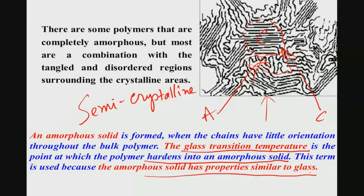When the crystalline-to-amorphous transition takes place, this is called the glass transition temperature (Tg) — the point at which the polymer hardens into an amorphous solid. The term 'glass' is used because amorphous solids have properties similar to glass. A popular example is mica-based dental glass ceramics used for dental restorations, where the crystalline-to-amorphous transition is also referred to as the glass transition temperature.